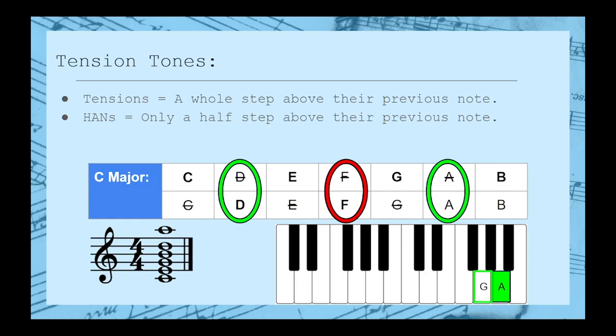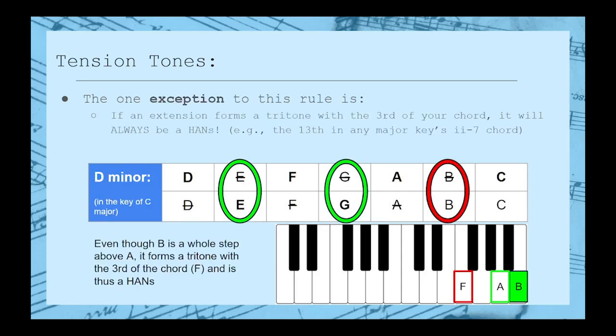The only exception to this rule is if the 13th forms a tritone with the 3rd of your chord. If so, it doesn't matter how it compares to the 5th, it will still be a harmonic avoidance note.